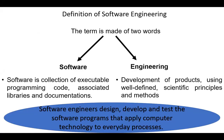The term software engineering is made of two words: software and engineering. Software is a collection of executable programming code, associated libraries, and computations. Engineering is the development of products using well-defined scientific principles and methods.